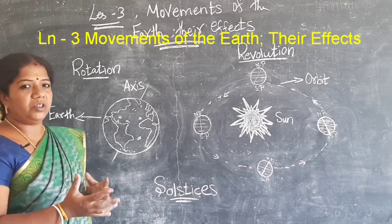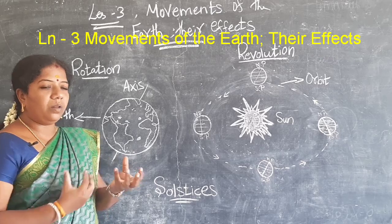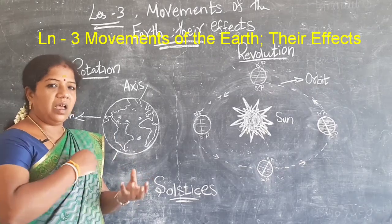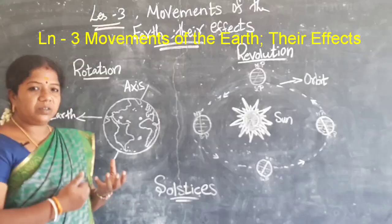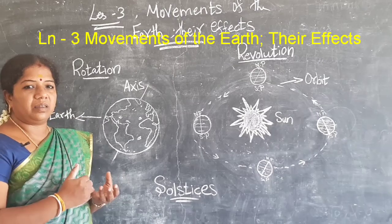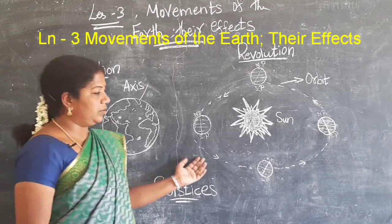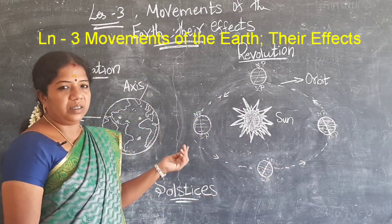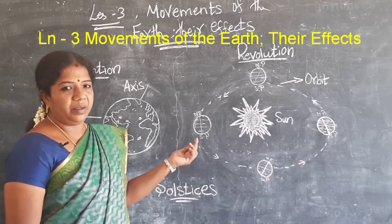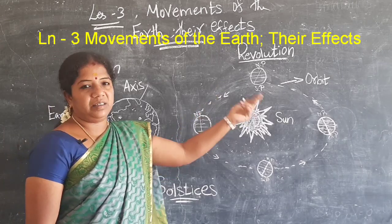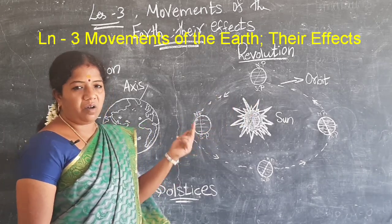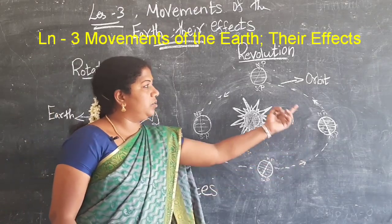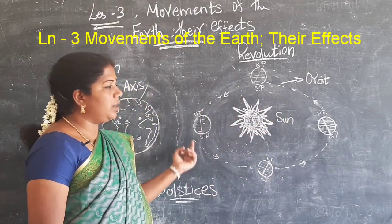Revolution means the earth revolves around the sun on its own path. We call this path the orbit — O-R-B-I-T. The earth travels around the sun on its own orbit.